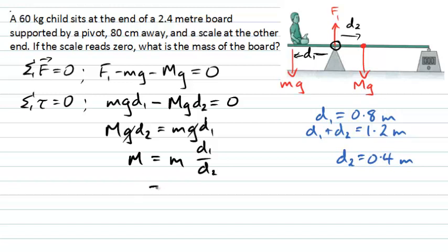That lets me calculate the mass of the board here as the mass of the child, which was 60 kilograms, multiplied by D1, which is 0.8 meters, divided by D2, 0.4. In fact, you can see the child in this case is actually twice as far away from the pivot point as the center of mass of the board. This is a factor of 2 here. And I finally get the calculation that the mass of the board is 120 kilograms.